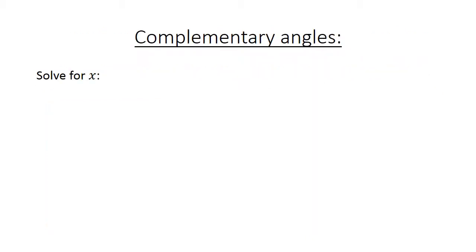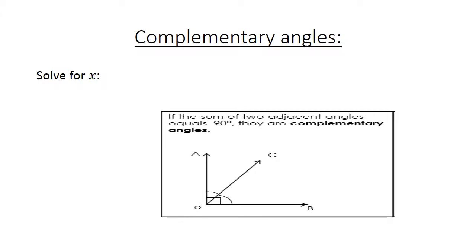Complementary angles: Solve for X. If the sum of two adjacent angles equals 90 degrees, they are complementary angles. The first one is 43 degrees and the second one is X. X plus 43 degrees equals 90 degrees. The reason? Complementary angles. X equals 90 degrees minus 43. X equals 47 degrees.